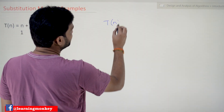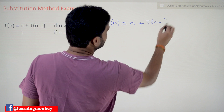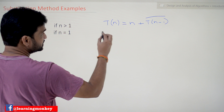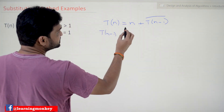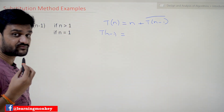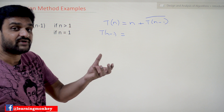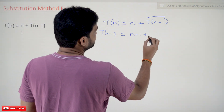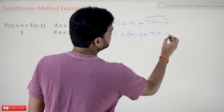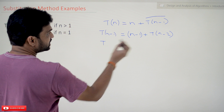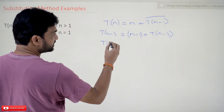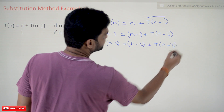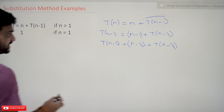The equation is T(n) = n + T(n-1). In order to get the value of T(n-1), we substitute n-1 into the equation. T(n-1) = (n-1) + T(n-2). Similarly, T(n-2) = (n-2) + T(n-3). This is the amount of time taken for each substituted value.